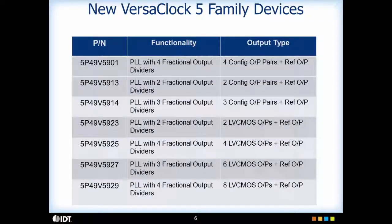This slide summarizes the seven devices that we have in production for the VersaClock 5 family. The flagship device 5P49V5901 has four fractional output dividers and can generate any output frequency you want up to 350 megahertz. The outputs can be configured to be LVPECL, LVDS, HCSL or LVCMOS output plus a reference output. The 5P49V5913 has two fractional output dividers for applications which need fewer outputs. For applications which need three universal outputs, 5P49V5914 can be used.